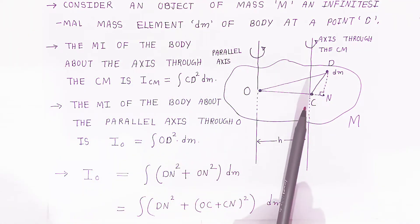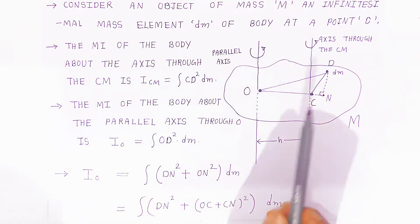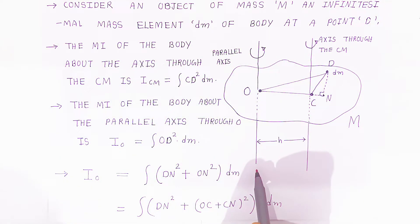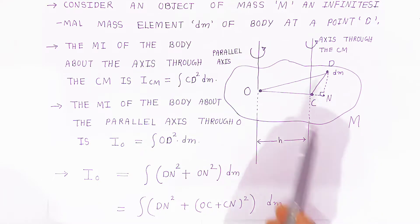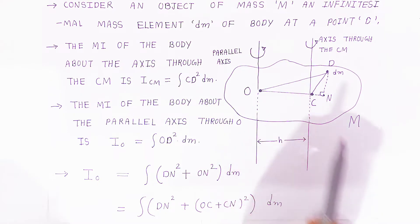Here IO is the moment of inertia about the given axis, IC is the moment of inertia about the parallel axis through the center of mass, and H is the distance between the two axes.